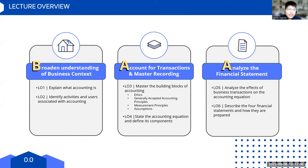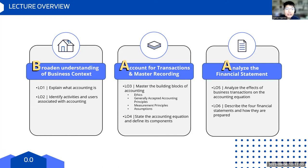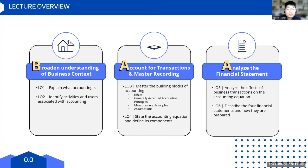In the first part, we want to broaden our understanding of the business context. We have two learning objectives: first, explain what accounting is and its formal definition; second, who uses accounting — the activities and users. Once clear on that, the second part focuses on accounting for transactions and recording, with two learning objectives: mastering the building blocks of accounting, and taking a deep dive into the accounting equation and defining its components.